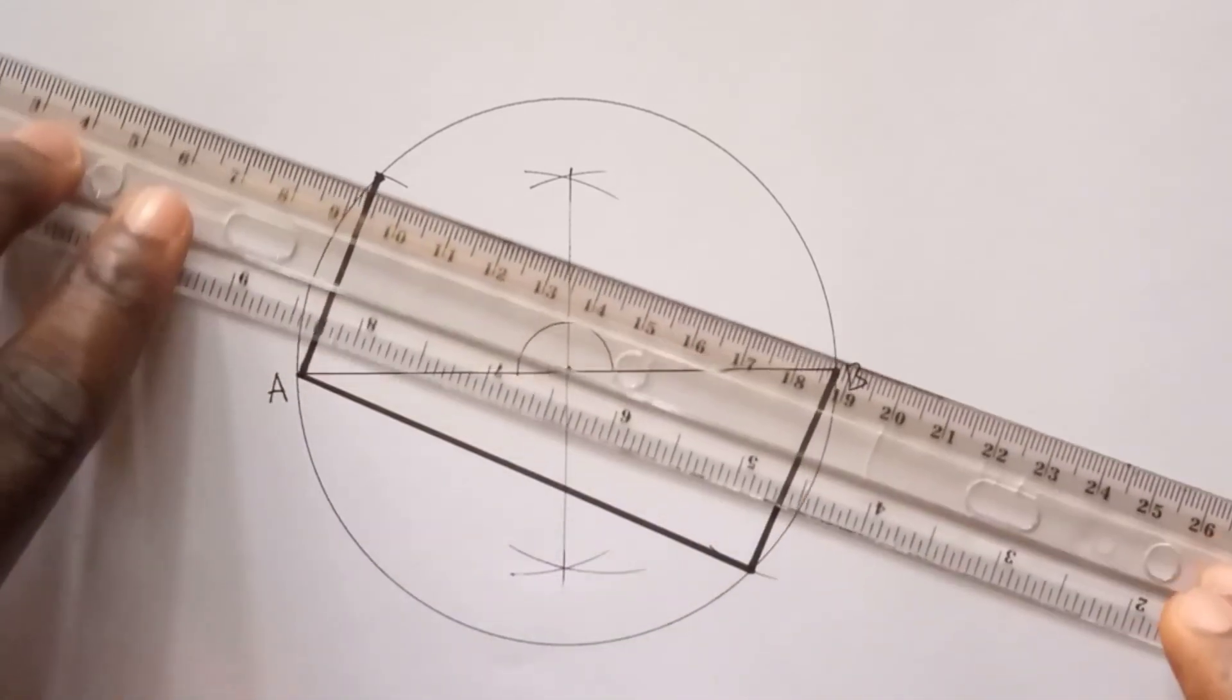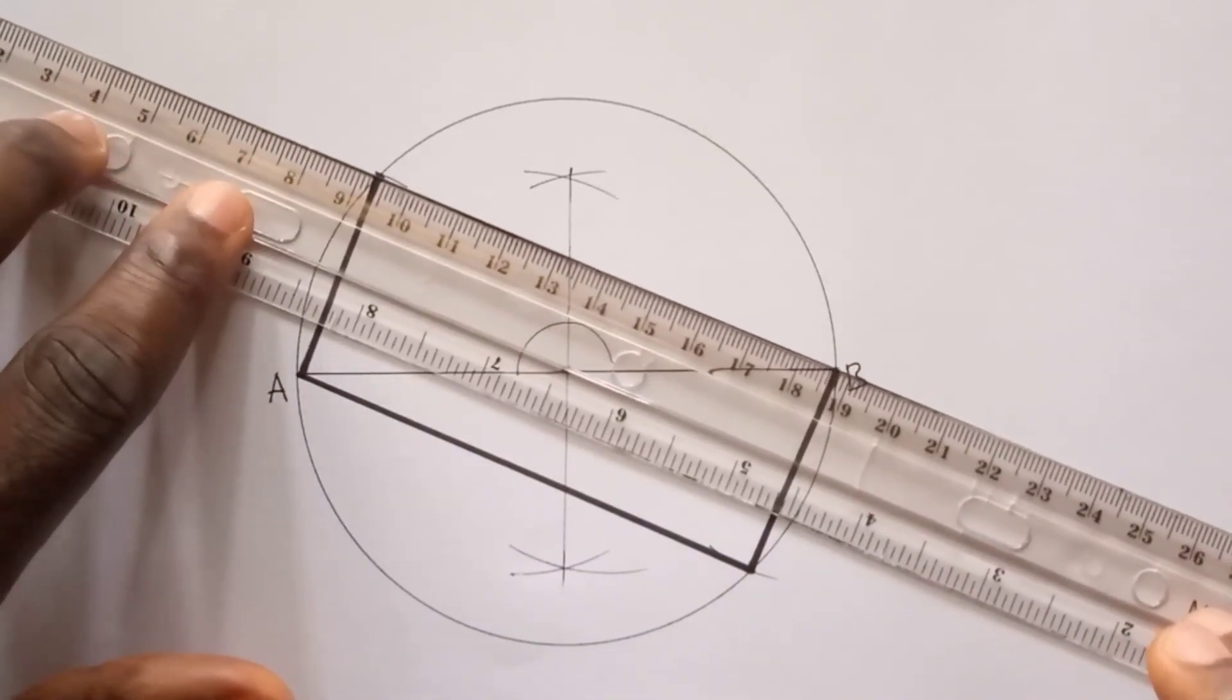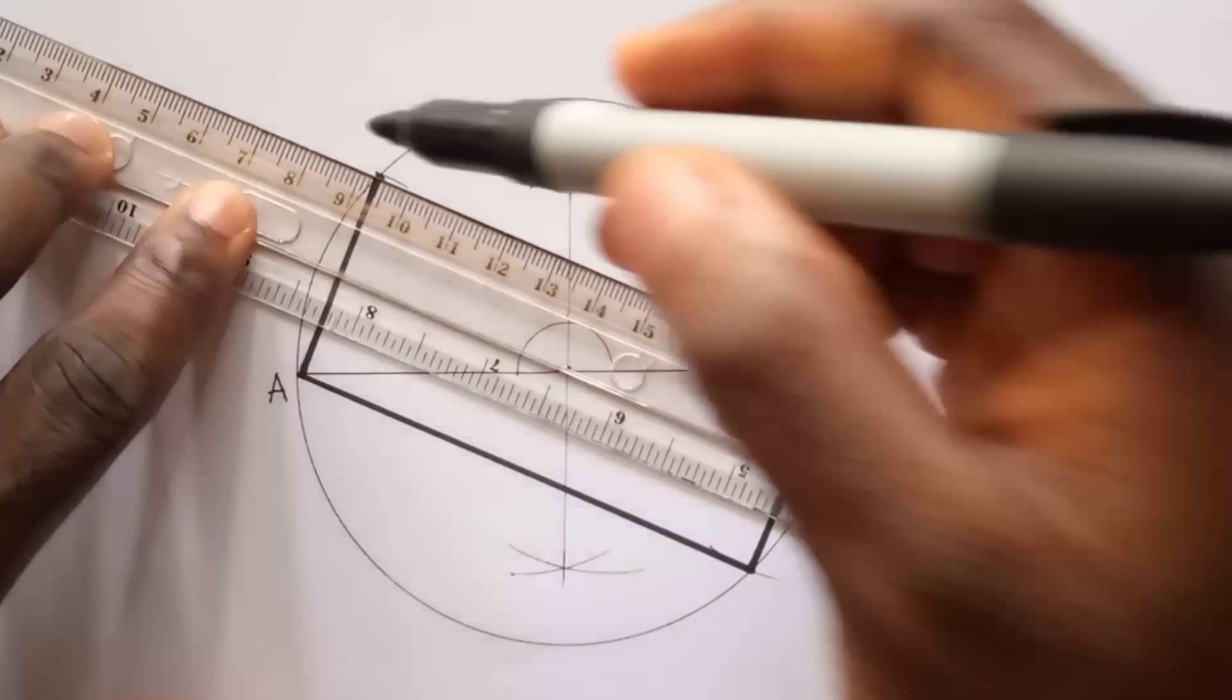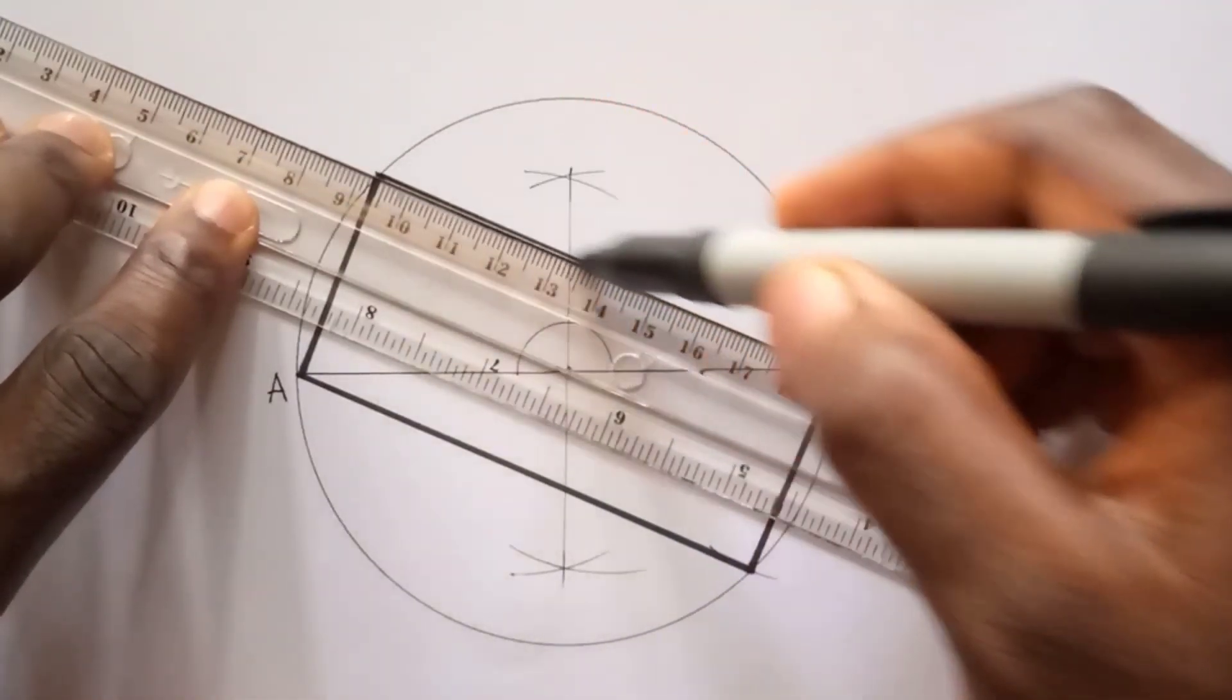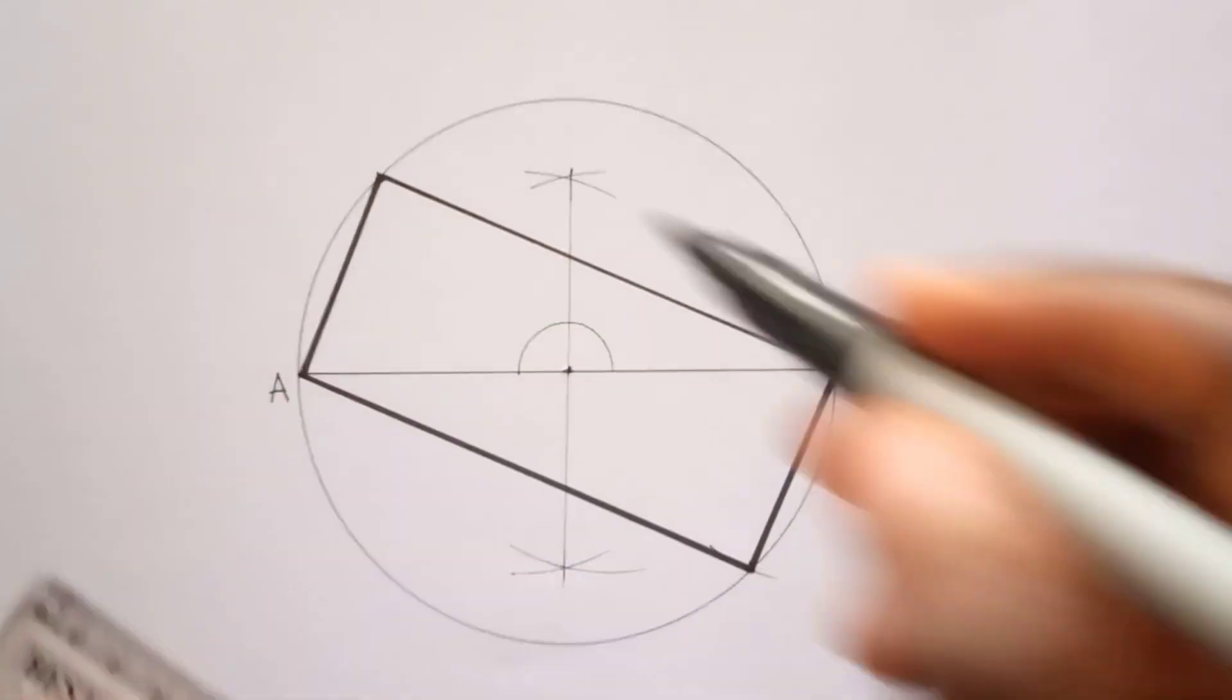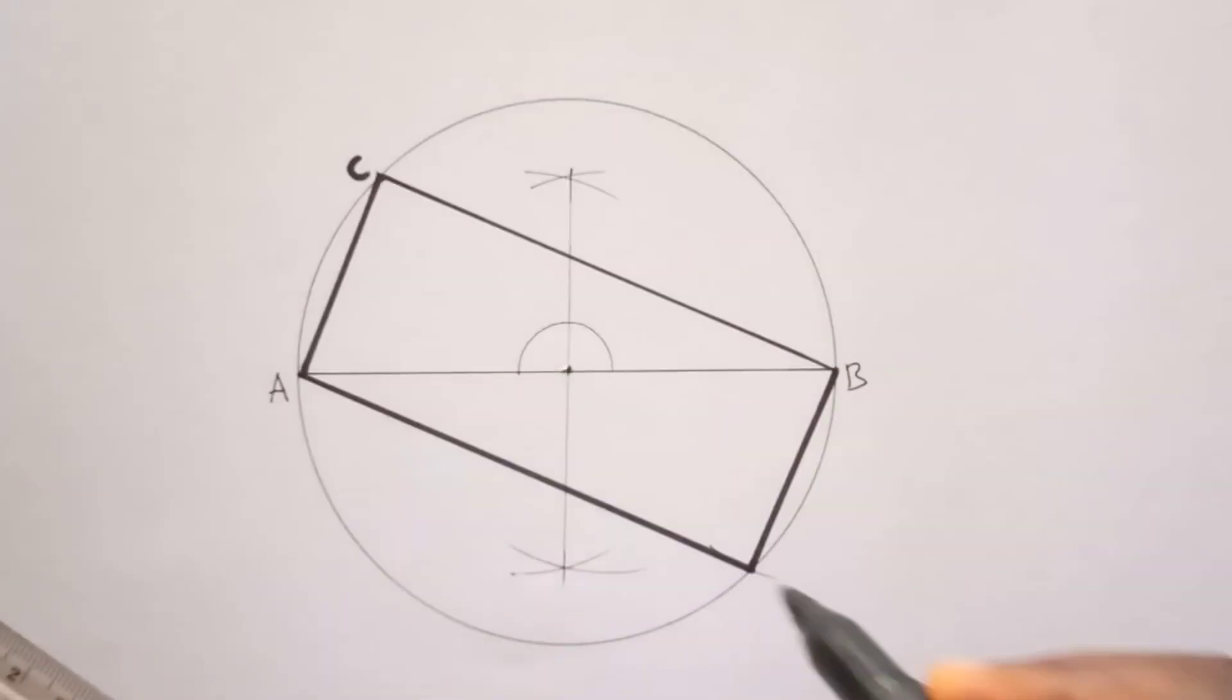And also link this one back to A to B. So this is our C, this is our D. With this, you succeeded in constructing a rectangle.